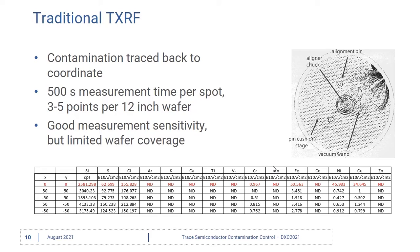so we can easily create specific coordinate maps for our TXRF measurements that match the processing tool contact points. Here's an example of a TXRF analysis report that detected chromium, iron, nickel, and copper at the center point. Because we made these coordinate-specific TXRF maps that align with the contact points of the processing tool,